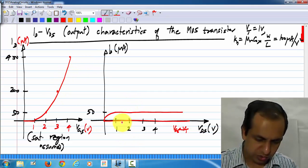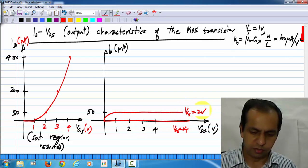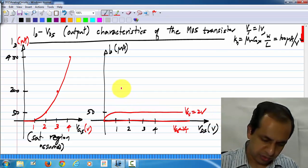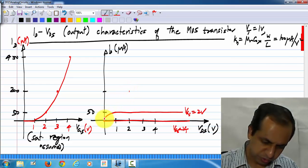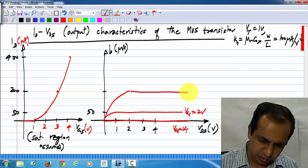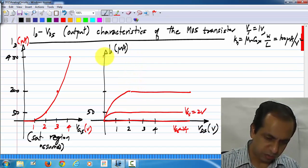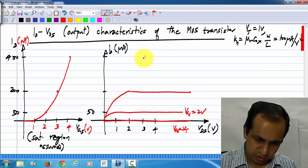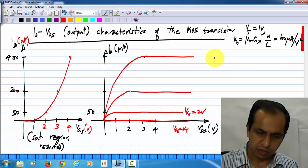And the output characteristics also for VGS of 1 volt, it saturates to 50 microamperes. For VGS of 3 volts, it saturates to 200 microamperes. And for VGS of 4 volts, it saturates to 450 microamperes.